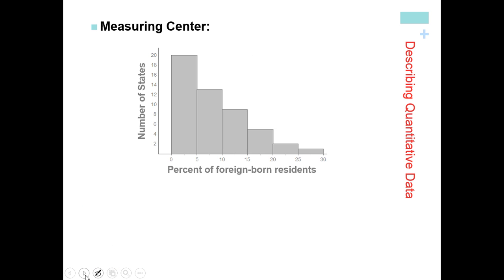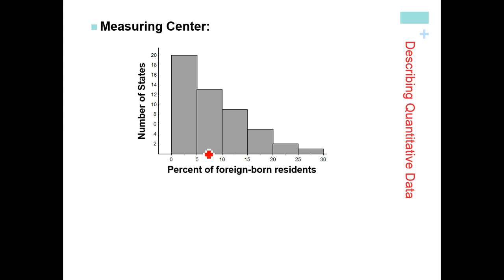When measuring center, the main types of measures we'll use are median and mean, depending on the type of data. But if you're given something like a histogram, you often don't know exactly what numbers are inside a bar. For instance, a bar that goes from 5 to 10 — if we conclude our median is in that bar, we don't know if it's 5, 6, 6.5, etc. So often you can just say the center would be somewhere between 5 and 10.